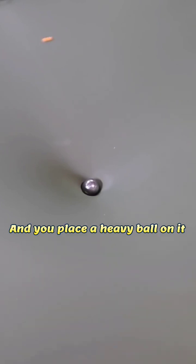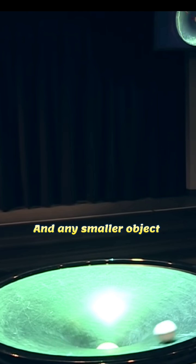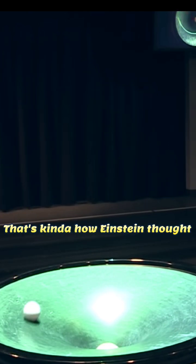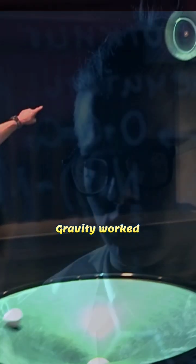Imagine a big trampoline and you place a heavy ball on it. The ball will create a dip in the trampoline and any smaller object placed on the trampoline will roll towards the bigger ball. That's kind of how Einstein thought gravity worked.